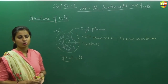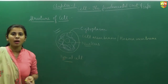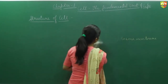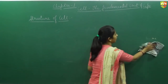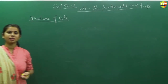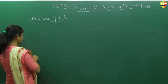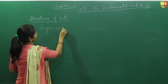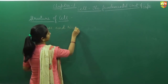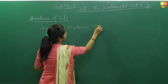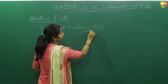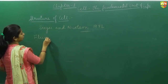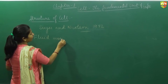The first part we will study individually is the plasma membrane. Plasma membrane is also known as cell membrane as well as plasma lemma. There were two scientists — Singer and Nicolson — who worked together and in the year 1972 proposed a model.